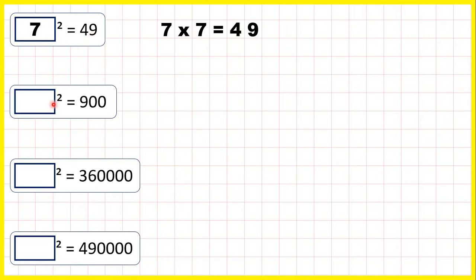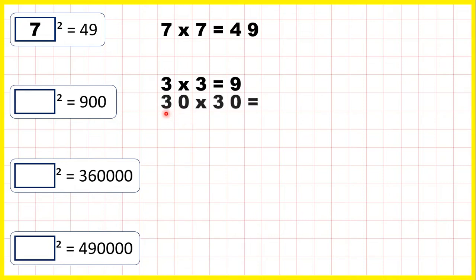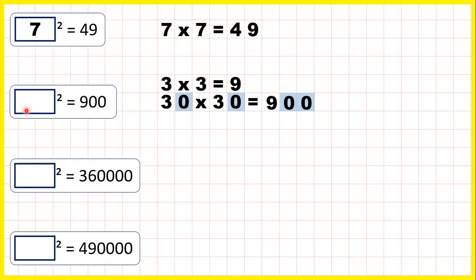Now, what squared is 900? Well, 9 is a square number, because 3 times 3 is 9. So 30 times 30 must be 900, because 3 times 3 is 9, and then if you have 2 end zeros in a multiplication question, you need 2 end zeros in the answer. So because 30 times 30 is 900, we can say that 30 squared is 900.